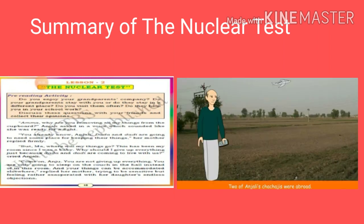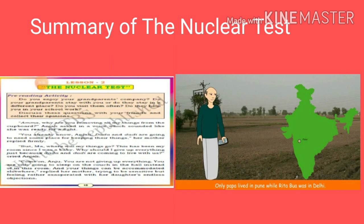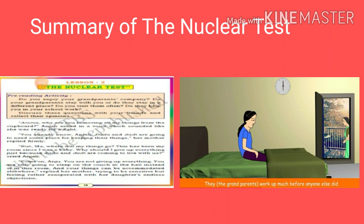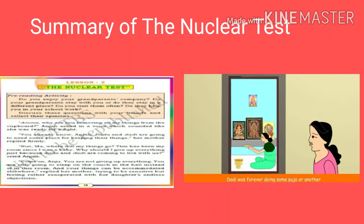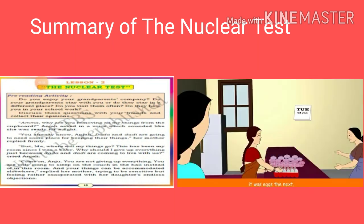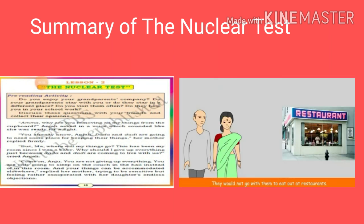Anjali's Chachajis — her father's brothers — are staying abroad, and only Buwa, that is her father's sister Ritha Buwa, is staying in Delhi. Dada Dadi came to stay with them in Pune. Anjali thought she would have to make adjustments: getting up early, daily puja, objections to outside food or junk food, no onions or eggs, not going out for shopping, restaurants, or movies. She anticipated these kinds of small adjustments.